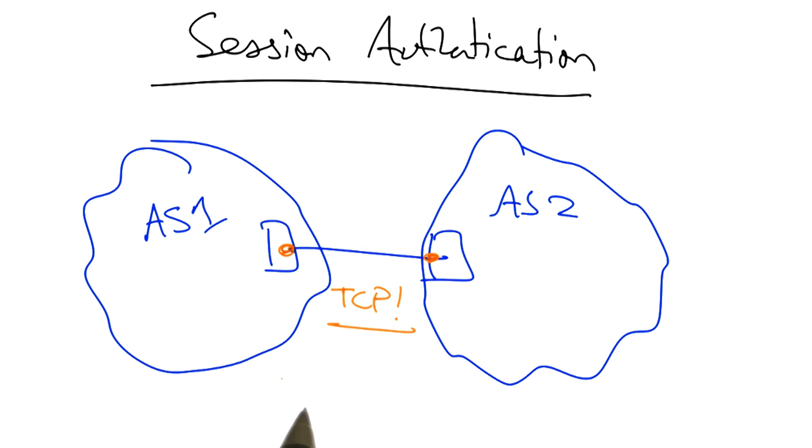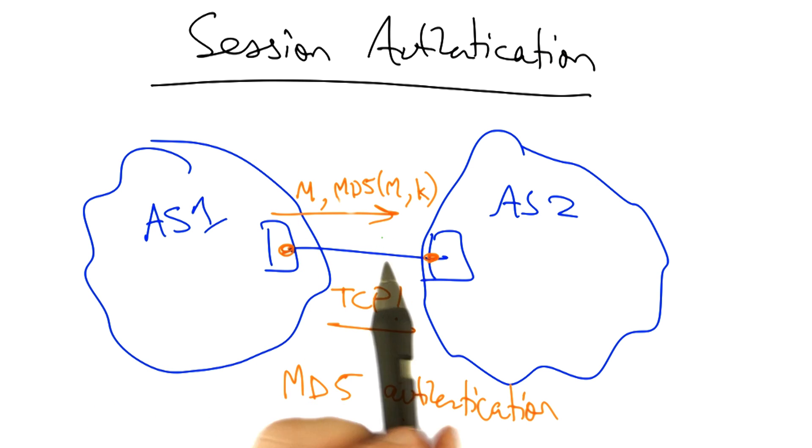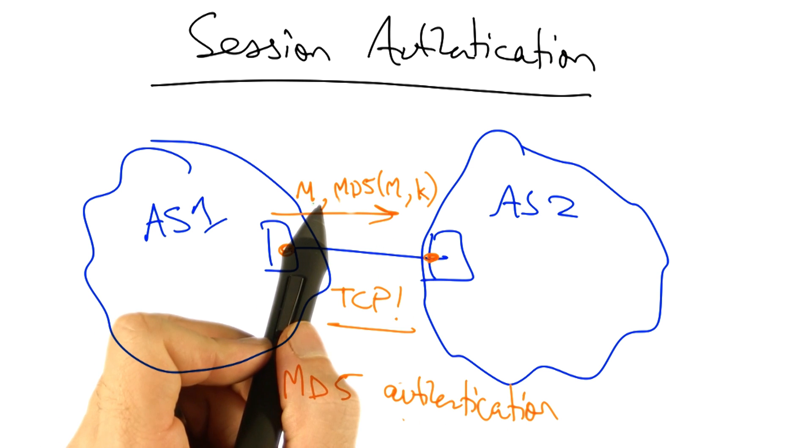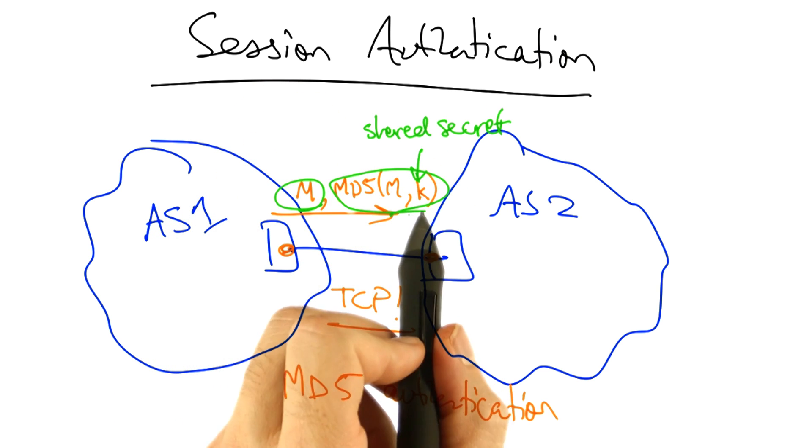The way that this is done in practice is using TCP's MD5 authentication option. In such a setup, every message exchanged on the TCP connection not only contains the message, but also a hash of the message with a shared secret key.